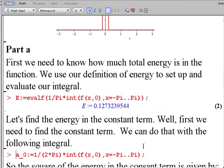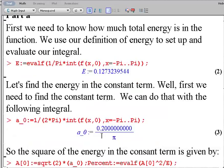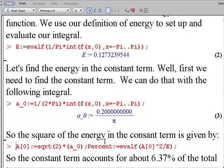Now we'll find our constant term. So using the definition for the constant term a_0 is 0.2 over π. All right, so to find out how much energy is contained in the constant term, we basically need to find our capital A_0, which is square root of 2 times a_0.